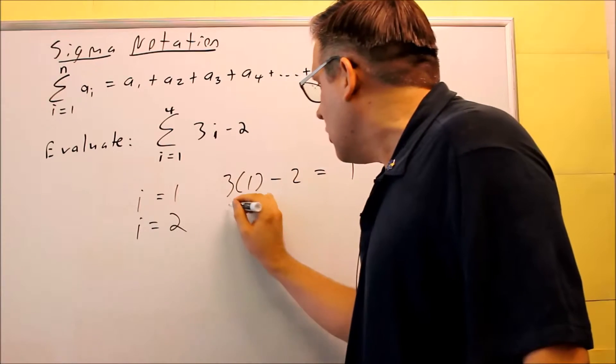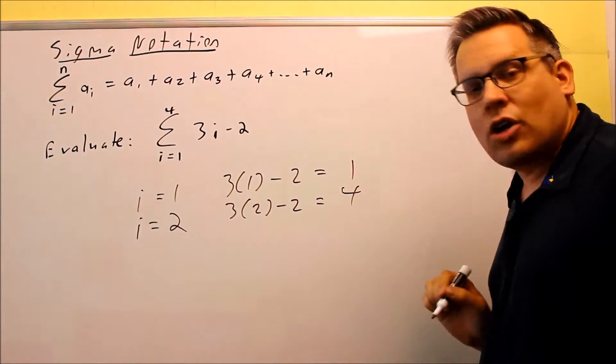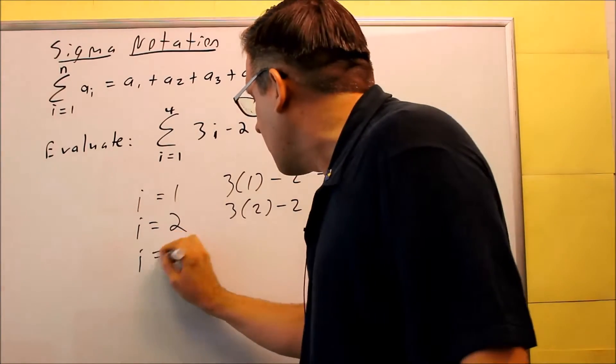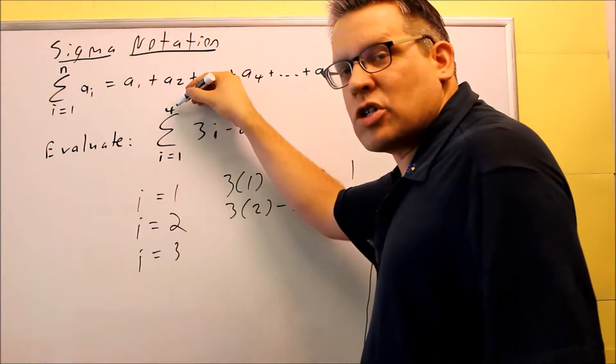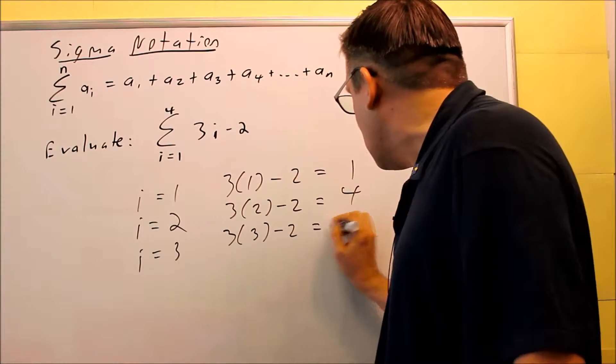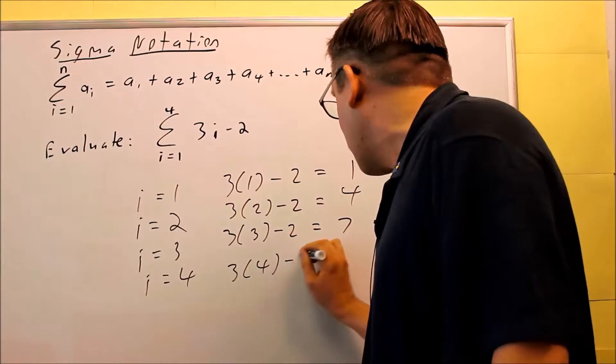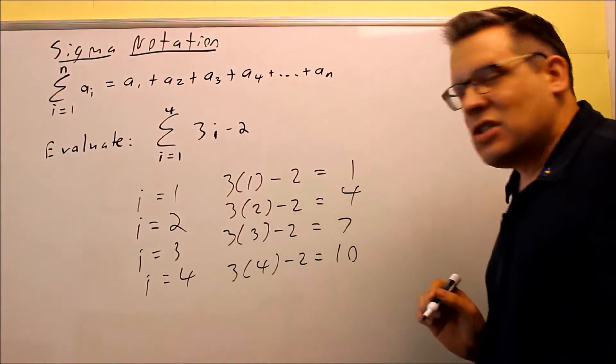Next, we're going to let i equal 2. So 3 times 2 minus 2, we do that, we get a 4. Keep on going until you reach 4. 4 will be your last term that you'll put in. So 3 times 3 minus 2 is 7. i equals 4, 3 times 4 minus 2, we get 10.